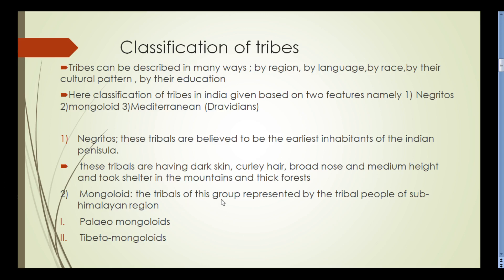Mongoloids are represented by tribal people of the sub-Himalayan region. People living in the Himalayan region are represented as Mongoloids. There are two different types: Palaeo-Mongoloids and Tibeto-Mongoloids.